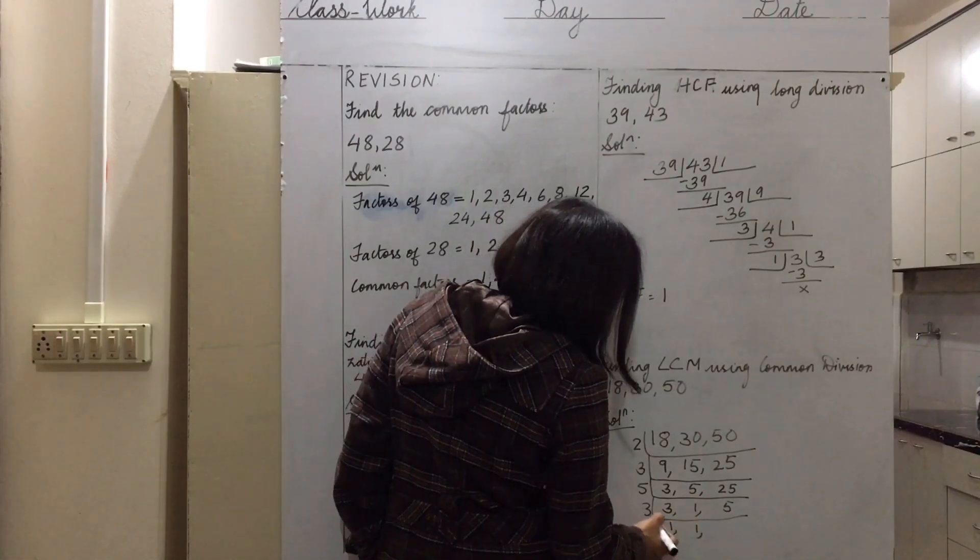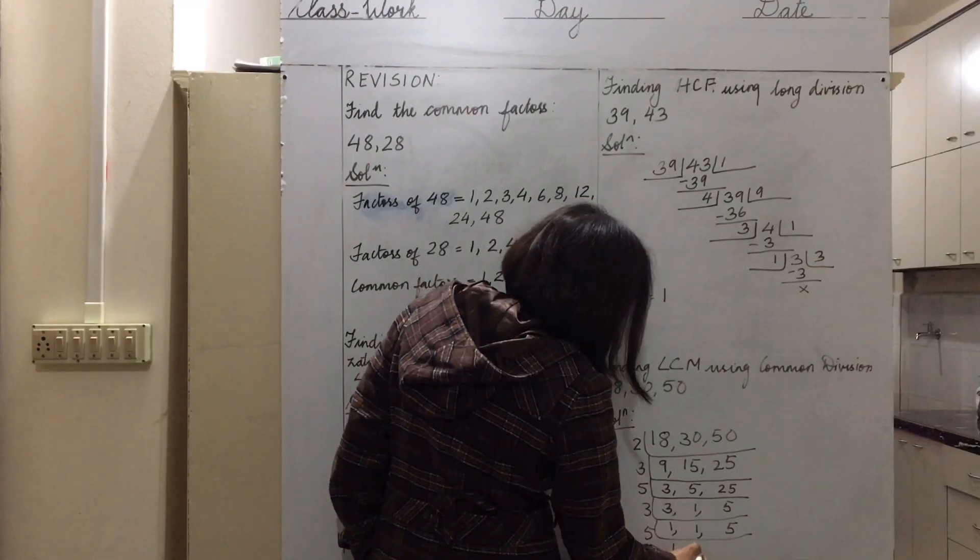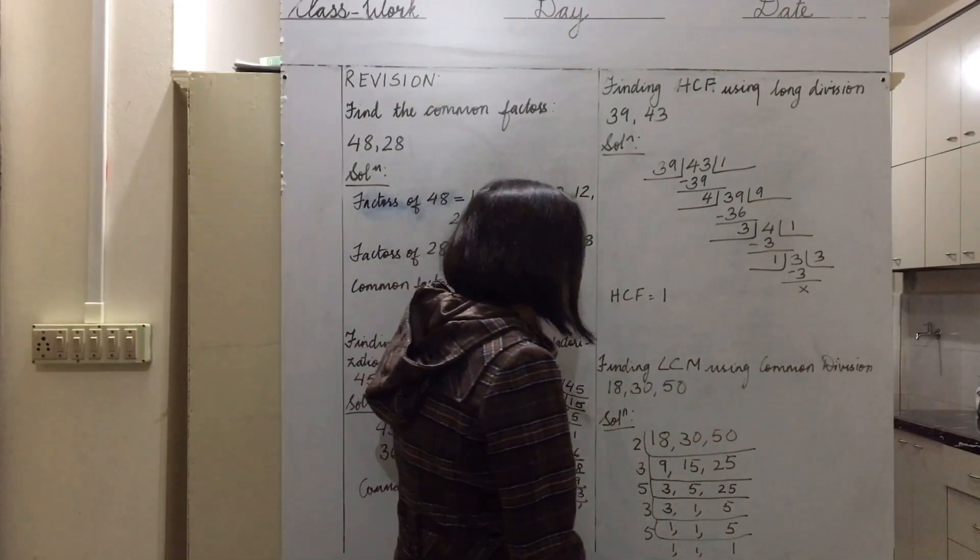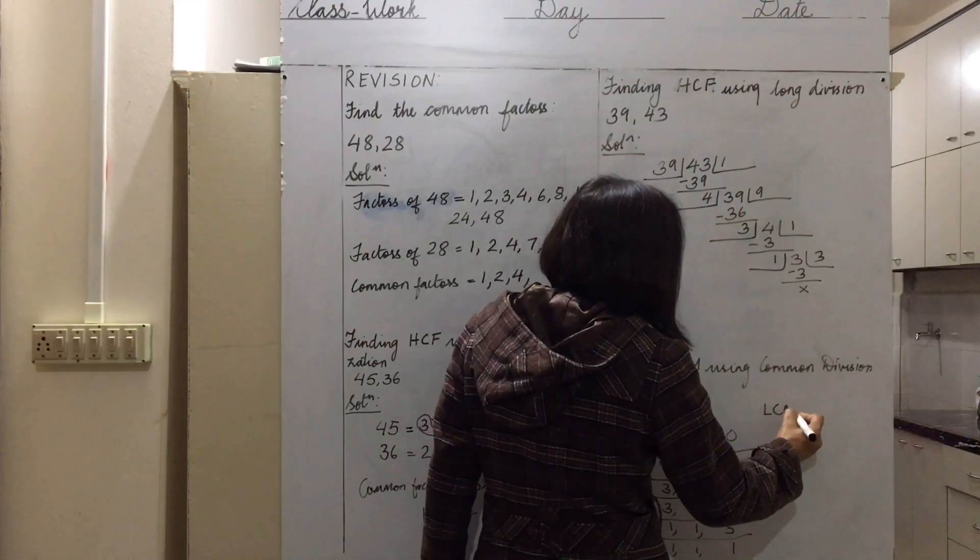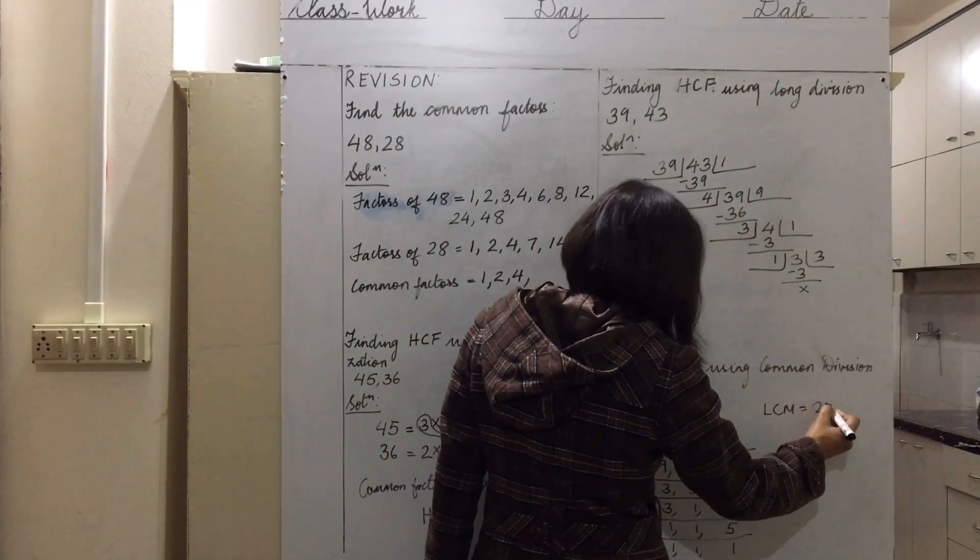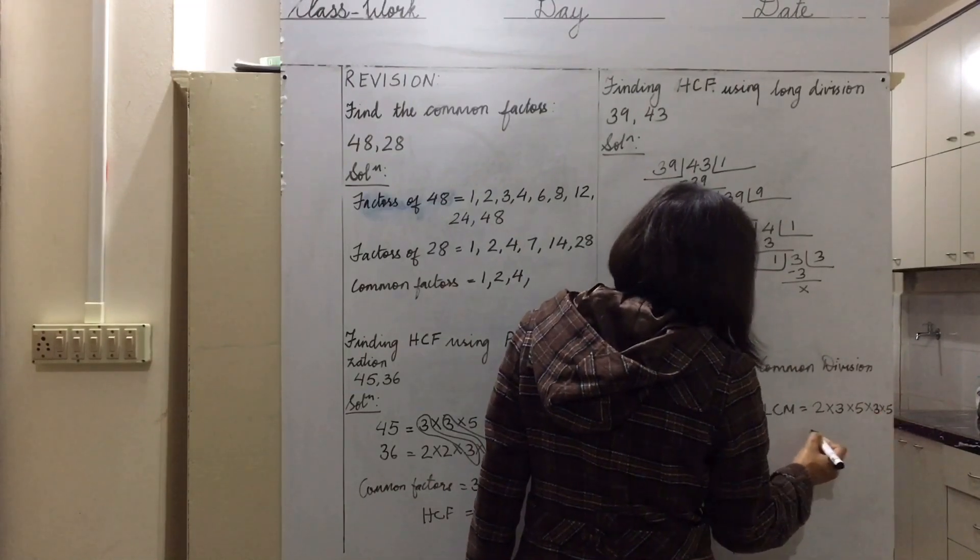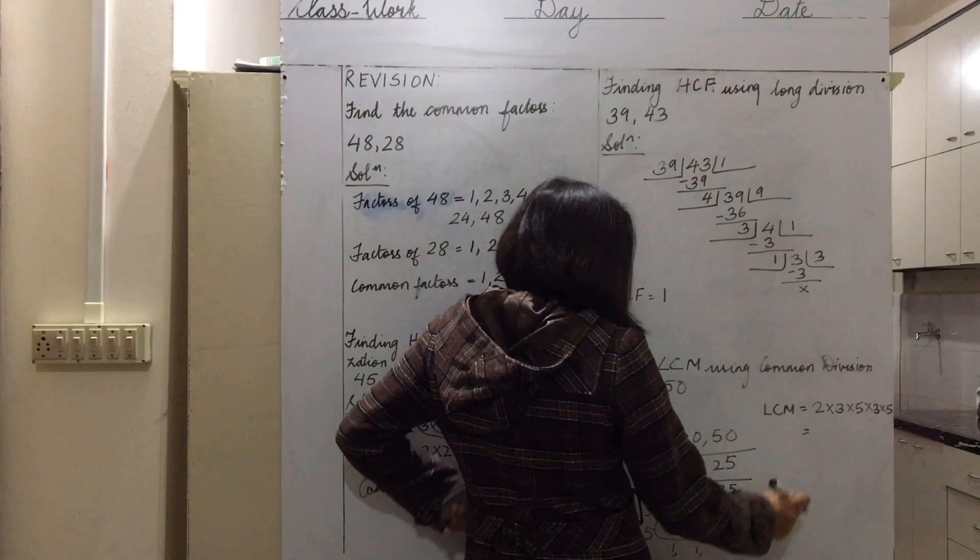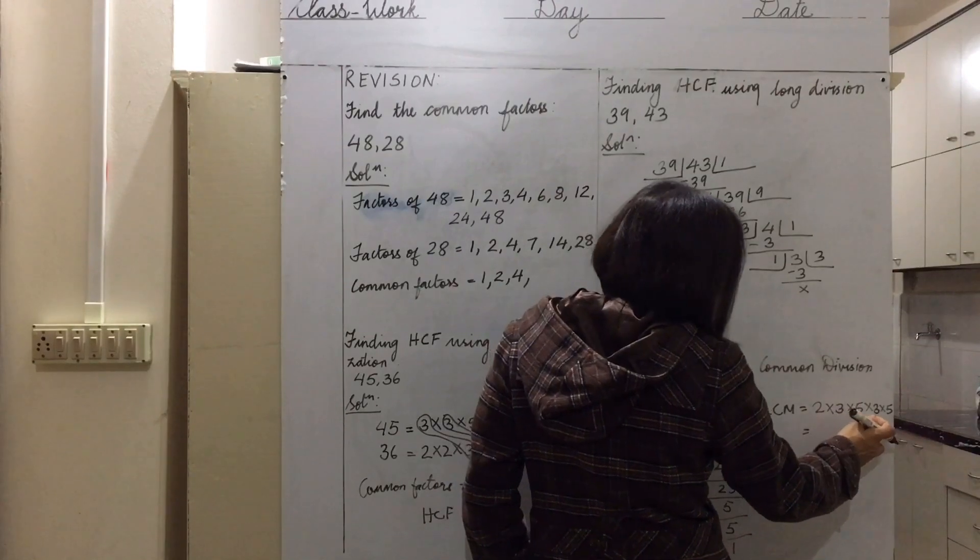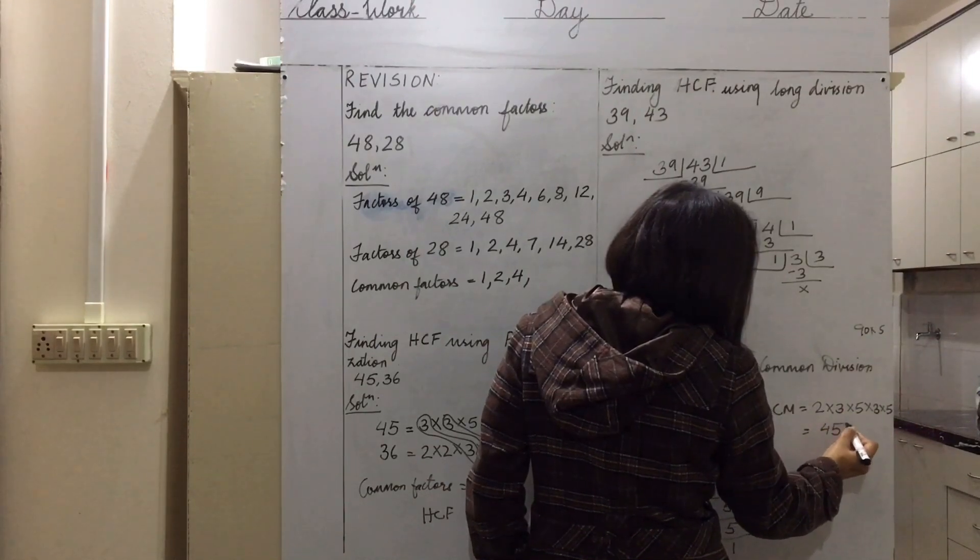Then five divides 5 and 25, giving 1, 1, 5. Finally 5 divides to give 1, 1, 1. The LCM equals all factors multiplied: 2 times 3 times 3 times 5 times 5. Two times 3 is 6, times 5 is 30, times 3 is 90, times 5 is 450. So the LCM of these three numbers is 450.